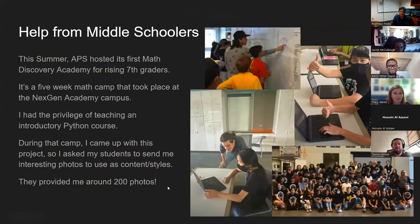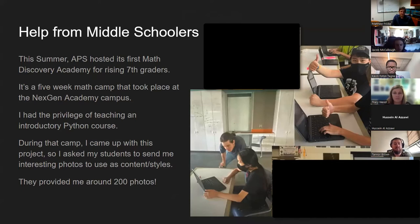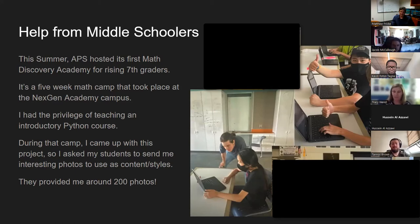This is the math camp I taught at — APS's first Math Discovery Academy for rising seventh graders, where I taught the Python course. During that class, while thinking of cool advanced Python things, I landed on machine learning and style transfer. I brought this project and asked all the kids to help me: give me some images, and I'd make every single one in the style of every single other one. I did not expect them to send me 200 photos. One kid sent me about 70 photos himself — he was super excited about the whole project.